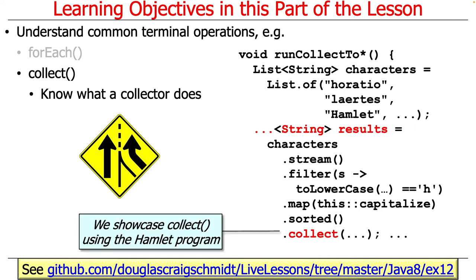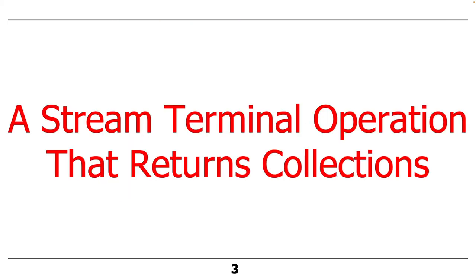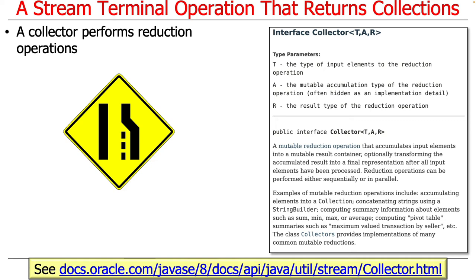We use our friendly neighborhood Hamlet program example to drive the whole discussion. So what is collect? To understand collect, you have to understand the concept of a collector. A collector performs reduction operations. The best way to think about it is like merging lanes — you take a bunch of things and reduce them to a single thing.